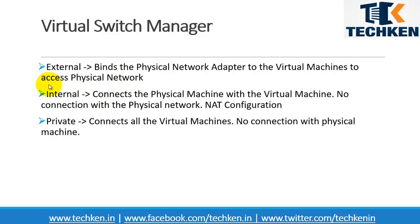What is meant by internal? The internal network is used to connect the physical machine from the virtual machine, so it can access the network connected to the physical host. You can also think of it as a NAT network configuration. This internal network is used for NAT configuration — it can access your physical network without connecting to your physical adapter.